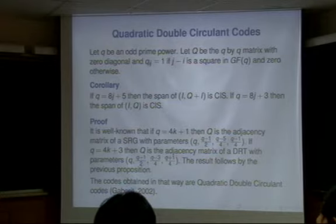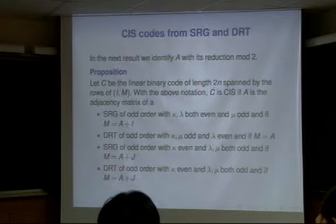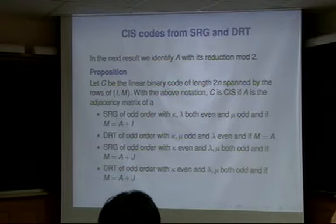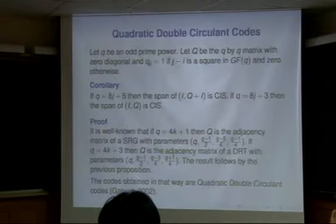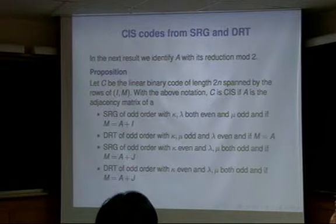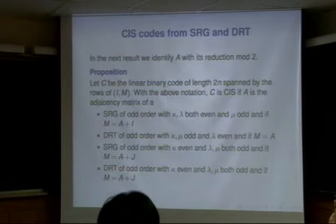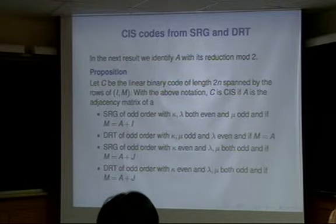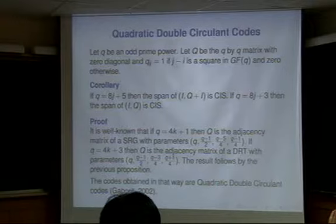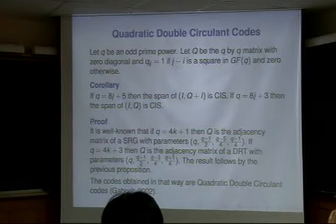It turns out that these codes have a very high minimum distance. They are called quadratic double circulant codes. This general construction, because it includes that special case, we believe our general statement will give very high minimum distance codes. But we didn't really test beyond this family because we have many results, so we don't need to include all the results — those are left for later research.